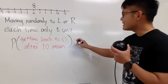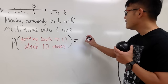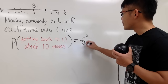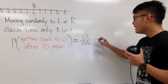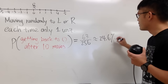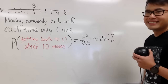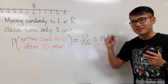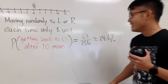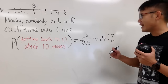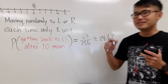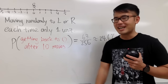The answer is 63 over 256, which is approximately 24.6%. If you got this right, you can comment 'yay' down below, and you might be featured in my next video. I will show you how to figure this out, and it is seriously similar to what we talked about last time.